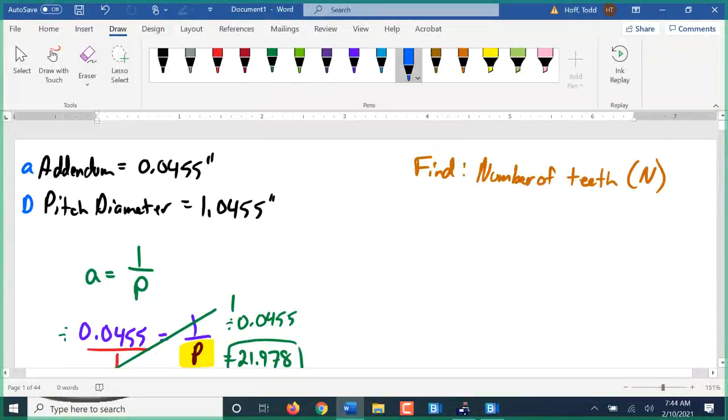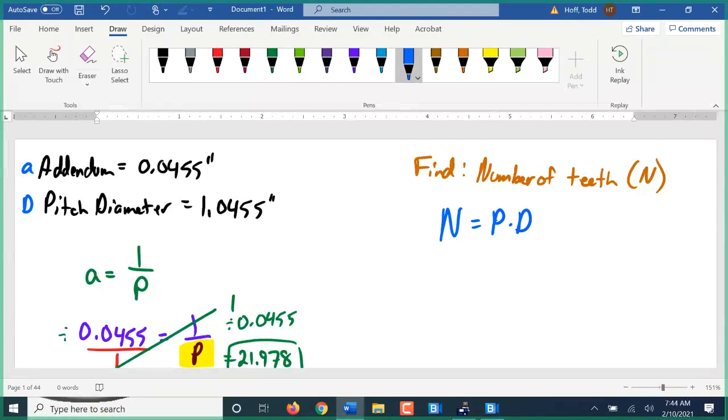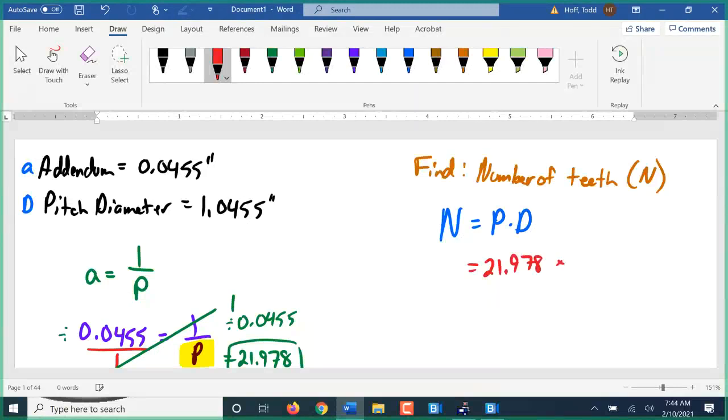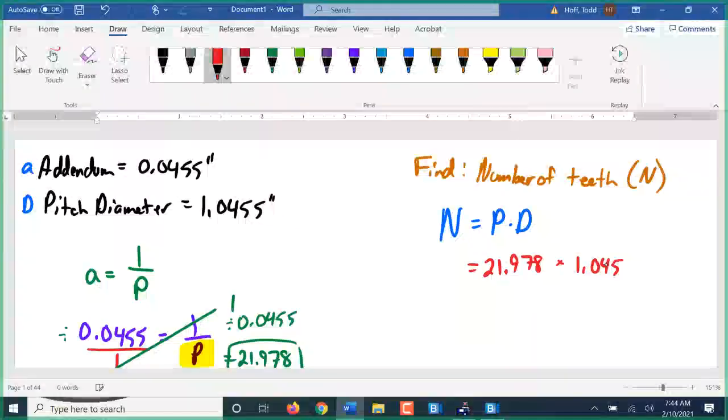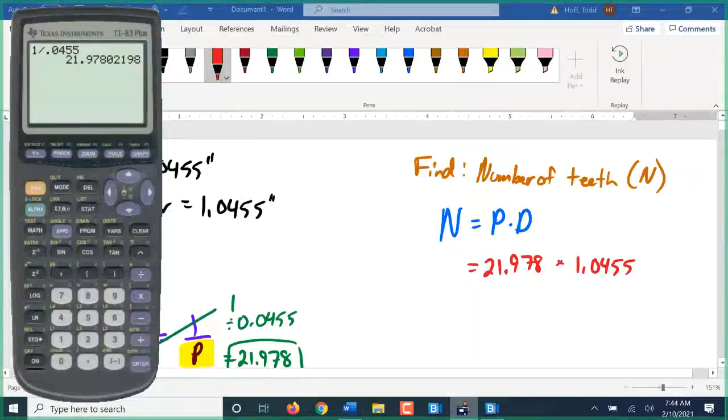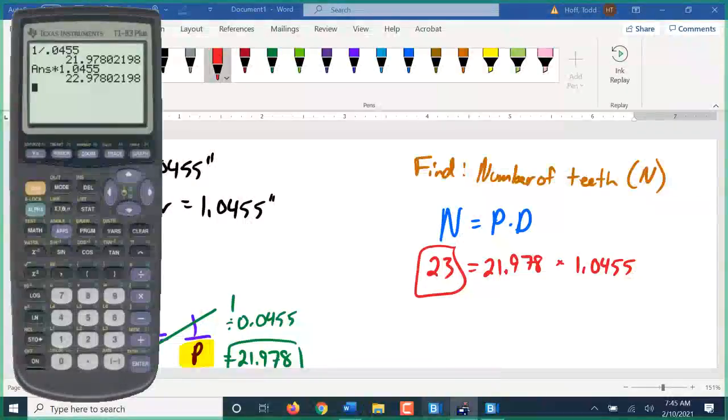So we've got a pitch of 21.978. Now we can go back to find the number of teeth. One of our formulas for the number of teeth is the pitch times the pitch diameter. N equals 21.978 times 1.0455. Since this is number of teeth, we're expecting this to come out really close to a whole number. 22.978 is close enough. We're rounding that to 23.